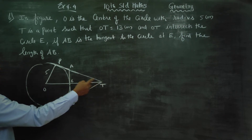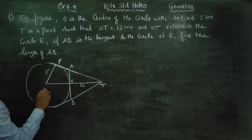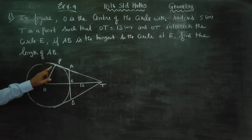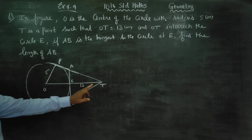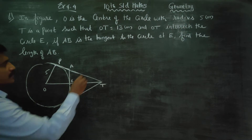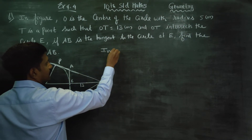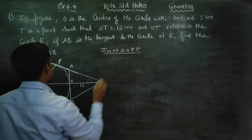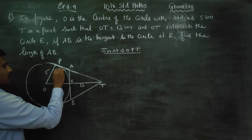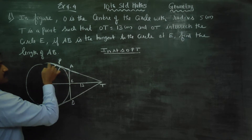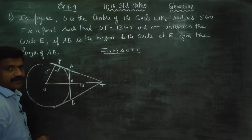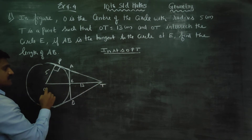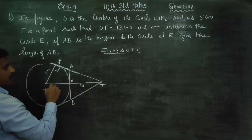AB is the tangent at T and P. Now, the first triangle is OTP. In right triangle OTP — why is it a right triangle? Because if you have a radius, the tangent is perpendicular to the radius, 90 degrees. So the tangent is always perpendicular to the radius. Therefore, TP is perpendicular to OP.